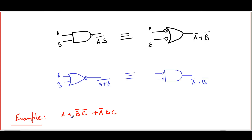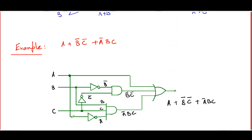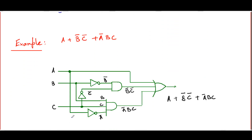First, we construct a Boolean circuit using AND, OR, and NOT gates. The final OR gate receives input A directly. Another AND gate receives B-bar and C-bar as inputs and outputs B-bar·C-bar. A third AND gate receives A-bar, B, and C and outputs A-bar·B·C. These feed into the three-input OR gate at the output.